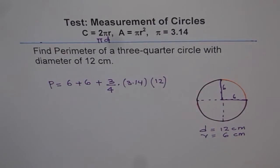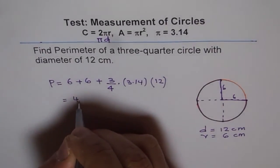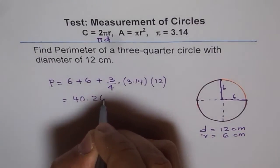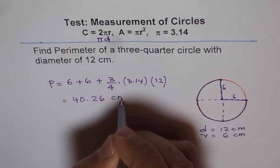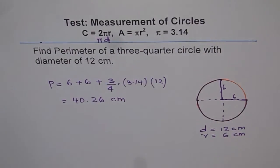You can use calculator and calculate your answer which is 6 plus 6 plus 3 times 3.14 times 12 divided by 4. This equals to 40.26, so that becomes the perimeter of a three-quarter circle with diameter of 12 centimeters.